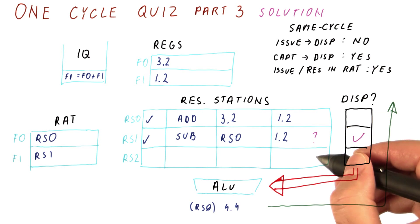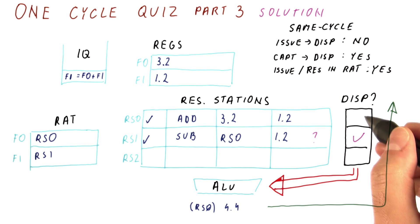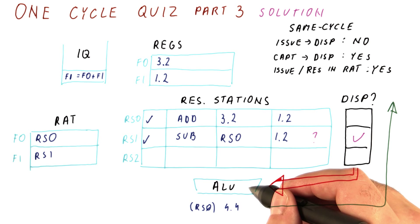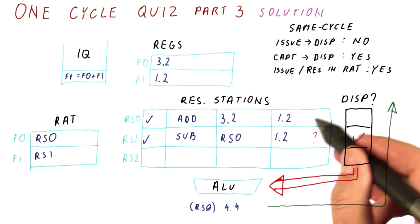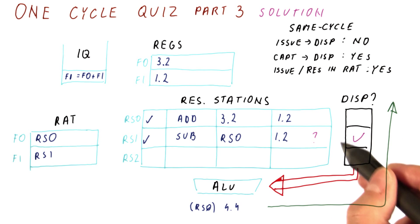If more than one instruction were eligible for dispatch, then we would have to pick which one dispatches because we only have one execution unit. In order to do that, we would need to be told what are the rules for picking among instructions. Fortunately, we didn't need that because only one is eligible for dispatch.